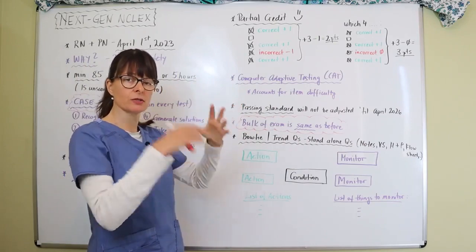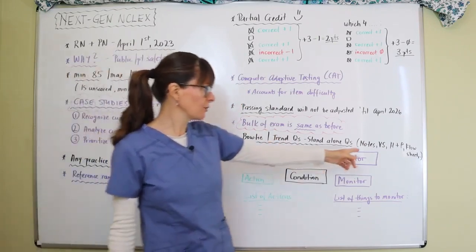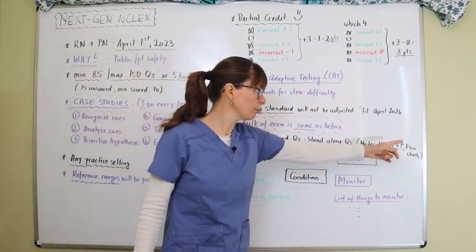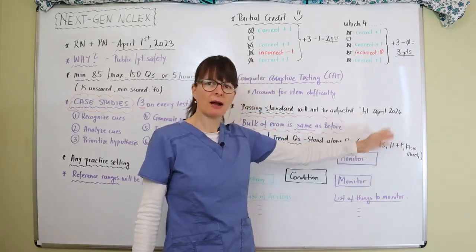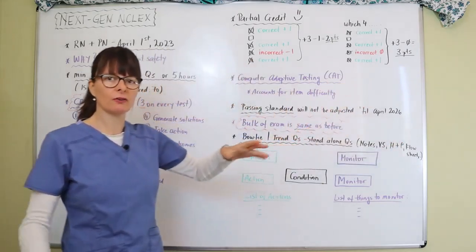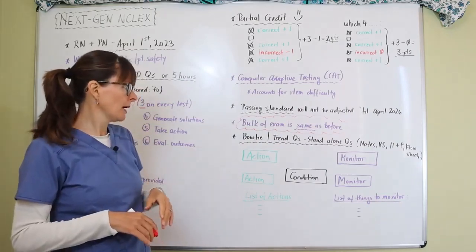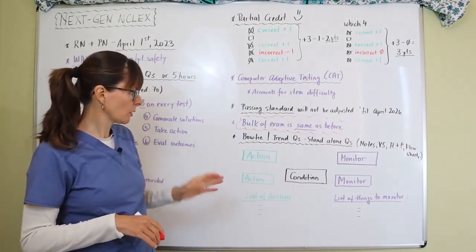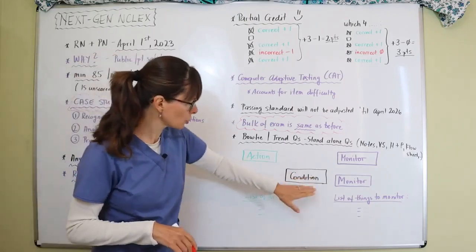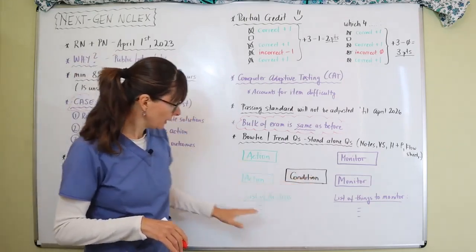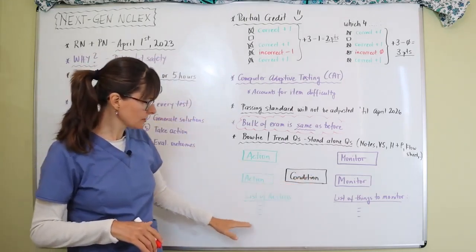So there's one case scenario, you might have given nurses' notes, vital signs, H&P, flow sections, I&O charts, any kind of trends that you can see, vital signs in particular. And these bow tie questions, then you're going to have a certain condition given.